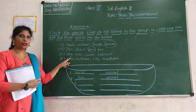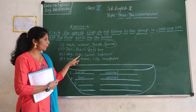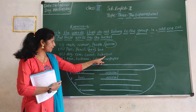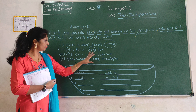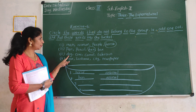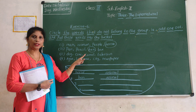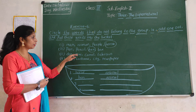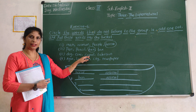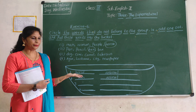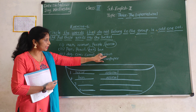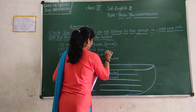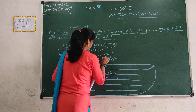Next one: dog, cow, camel, television. Which one is the odd one out? Dog, cow, camel are animals. Television is a thing. So television is the odd one out.